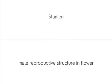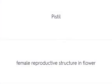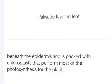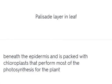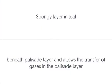The stamen is the male reproductive structure in a flower. The pistil is the female reproductive structure in a flower. The palisade layer in a leaf is beneath the epidermis and is packed with chloroplasts that perform most of the photosynthesis for the plant. The spongy layer is beneath the palisade layer and allows the transfer of gases to the palisade layer.